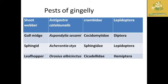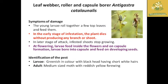The list contains the name of the insect, the scientific name, the family, and the order. The first insect I am going to explain is the leaf webber, oral storer, and capsule borer, where the scientific name is Antigastra catalaunalis.